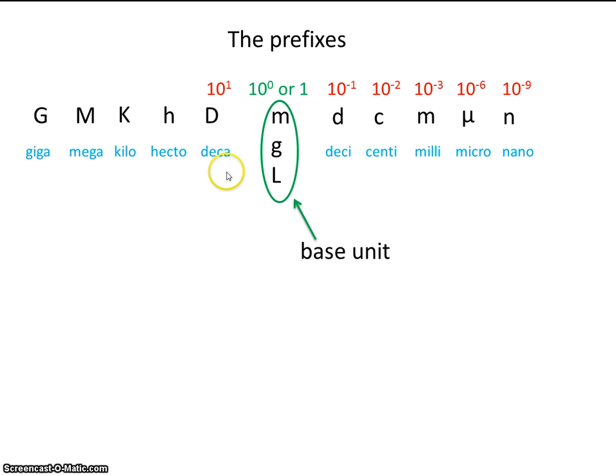Conversely, on the other side, deca is ten times bigger than the base unit. Hecto is a hundred times, and kilo is a thousand times. And now, once again, we're going to jump by a factor of a thousand. So mega means a million, and giga means a billion.